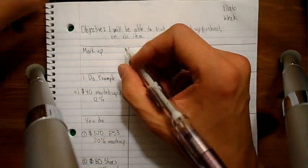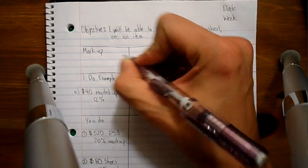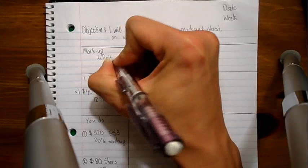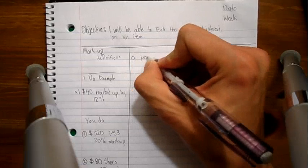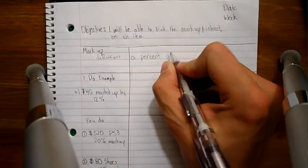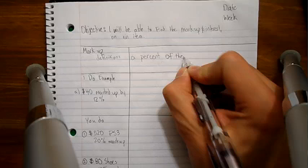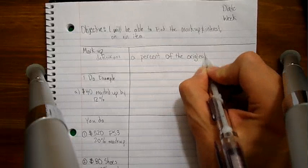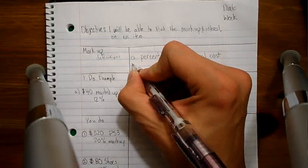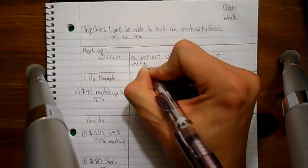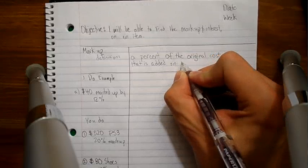So, as we said from the get-go, the markup. The markup is a percent markup. Its definition, here we go, is a percent of the original cost. I said, of the original cost. That is added on to the original price. It's added on to the original price.